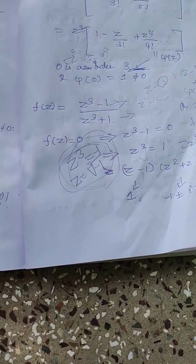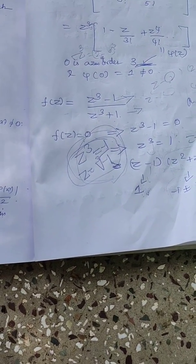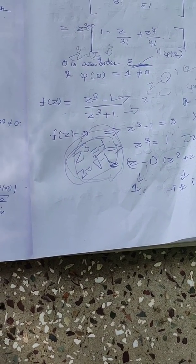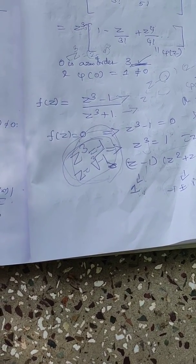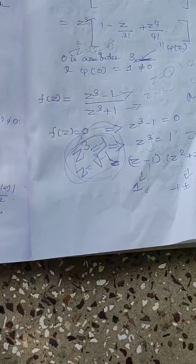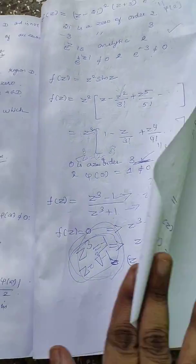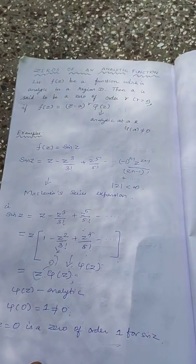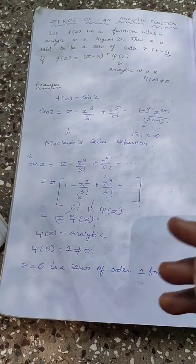So we discussed, we learned the formal definition of zeros of an analytic function, and we discussed them with some examples. So this function is analytic except at this point. I hope you understand the concept. Let us meet in the next video. Until then, bye.